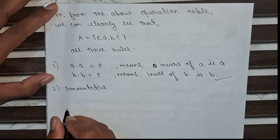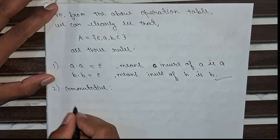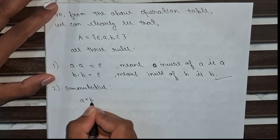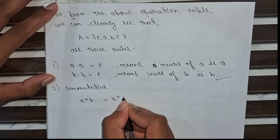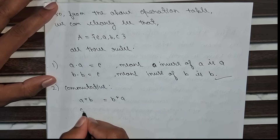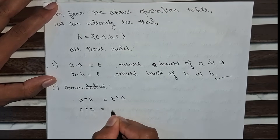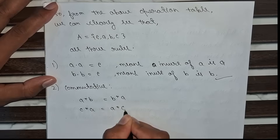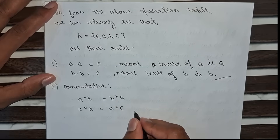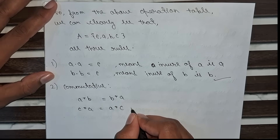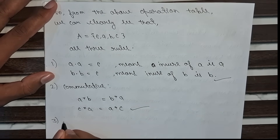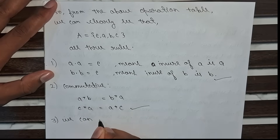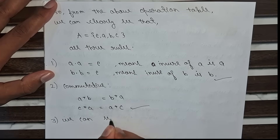For the second rule, commutativity: a × b = b × a, and c × a = a × c. We can clearly see from the operation table that the commutative property is followed.